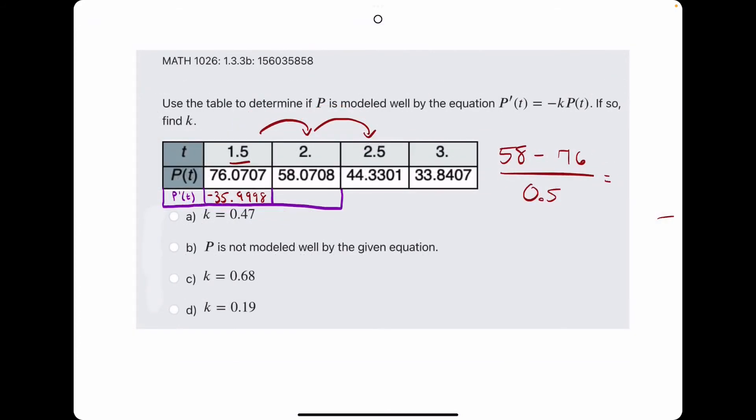So then we'll do the same thing for the p prime at 2, so we'll do the 44 value minus the 58 value, but then we will divide it by the difference in t value, so 0.5. So talking it through in my phone calculator, we have 44.3301 minus 58.0708, and we divide that by 0.5, and we get negative 27.4814.